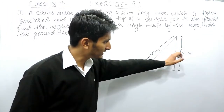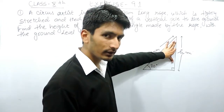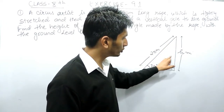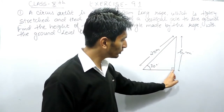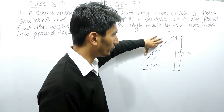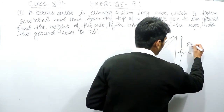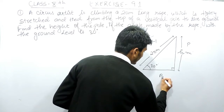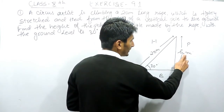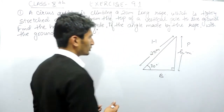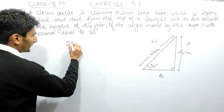The side opposite to theta is known as the perpendicular, and the side opposite to 90 degrees is known as the hypotenuse. So this is our hypotenuse, this is our perpendicular, and the remaining side is the base. Here we are talking about the ratio between perpendicular and hypotenuse, so we have to use the ratio for sine theta.